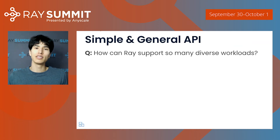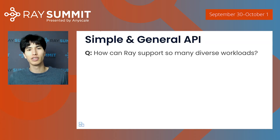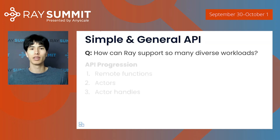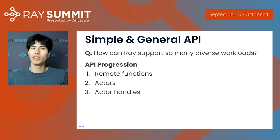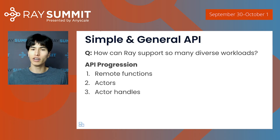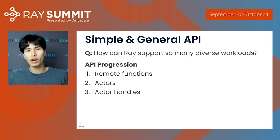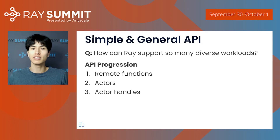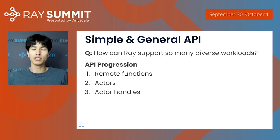One question we get a lot is: how can Ray support so many different types of workloads? The core Ray API has been quite stable, with three major developments. We started Ray with just remote functions — the ability to execute Python functions asynchronously in a cluster. That's very powerful but wasn't quite enough to do machine learning. Then we added actors, so you could translate Python objects and classes to the distributed setting and support stateful applications. All of a sudden that opened up a bunch of doors, and today actors are the building block for most of the libraries built on Ray.